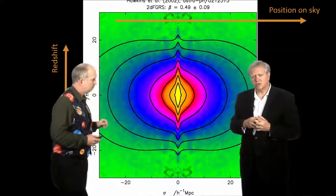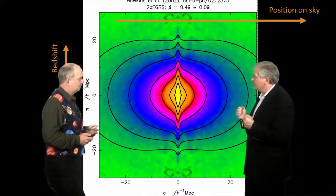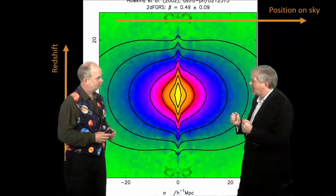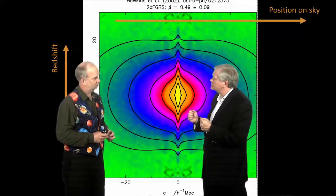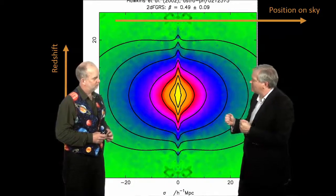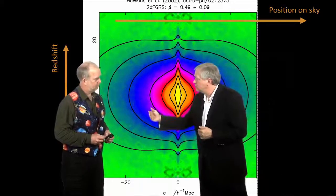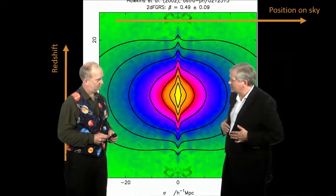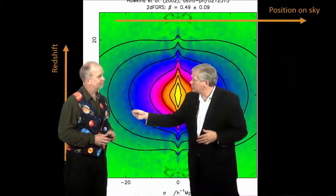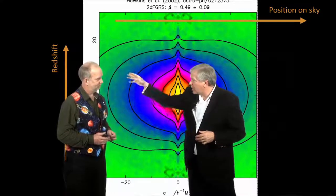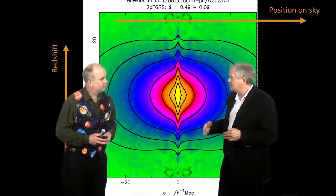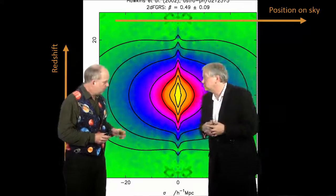But it also tells you that if you're moving, if I'm being attracted to you, I'm going to have a peculiar motion. So, I'm going to have a velocity which is different. I'm going to be falling towards you, which means my velocity is going to be closer to yours. I'm falling towards you either behind or in front than if I'm not related to you at all.